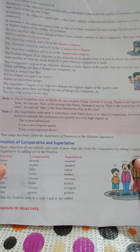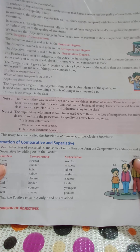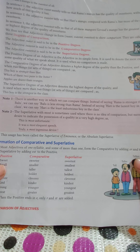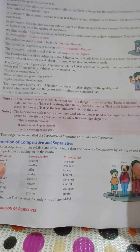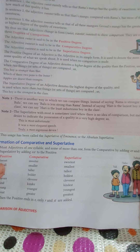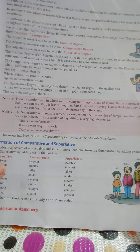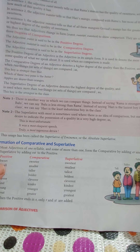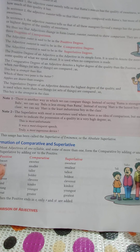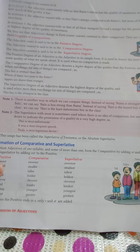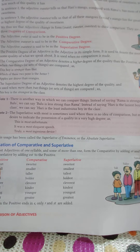We know that adjectives change their form in order to show comparison, like 'sweet' to 'sweeter' and 'sweetest.' To show comparison, we learn about comparisons. They are called the three degrees of comparison.